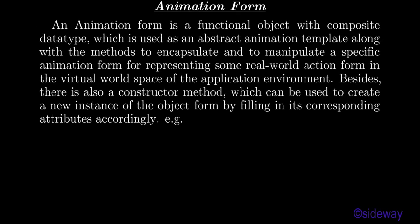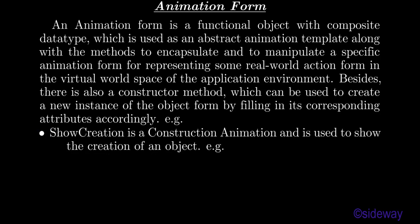An animation form is a functional object with composite data type, used as an abstract animation template along with the methods to encapsulate and manipulate a specific animation form for representing some real-world action form in the virtual world space. There is also a constructor method to create new instances by filling in corresponding attributes. For example, ShowCreation is a construction animation used to show the creation of an object: self.play(ShowCreation(circle)).